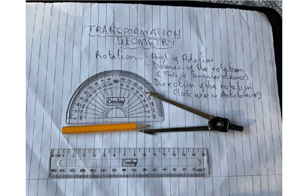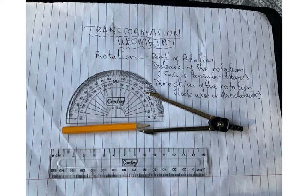Now, there are three important points that govern a rotation transformation. One, a rotation must have a point of rotation — there must be a specific point at which the object is being rotated. There also has to be a rotational angular distance through which the rotation takes place. And the third is that there must be a direction of rotation.